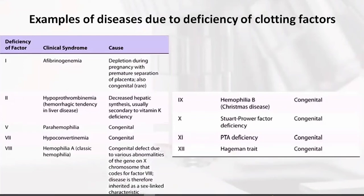Some of the examples of diseases due to the deficiency of clotting factors. For the deficiency of Factor 1, which is basically fibrinogen, when it is not present or when it is absent, the clinical symptom is afibrinogenemia.